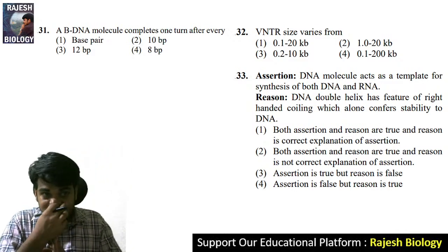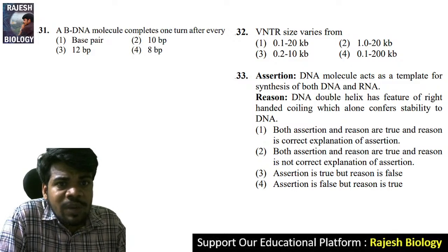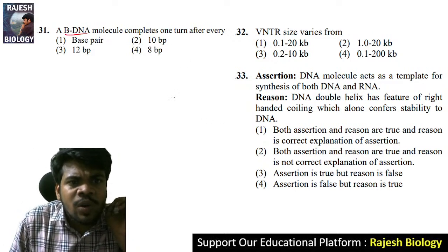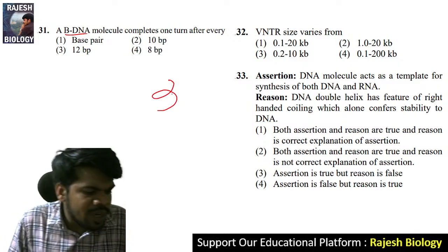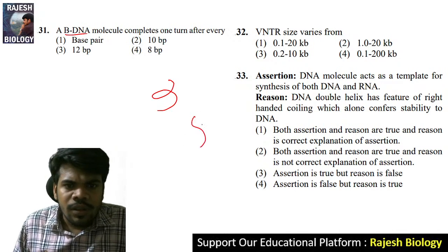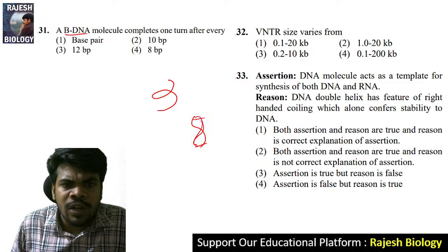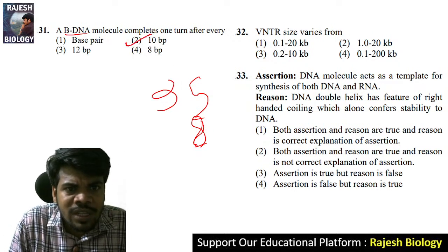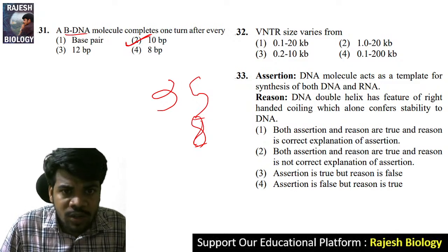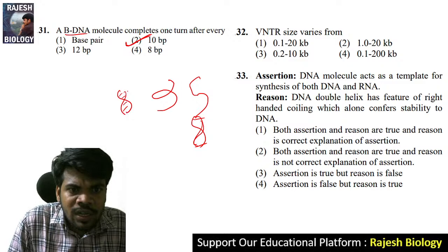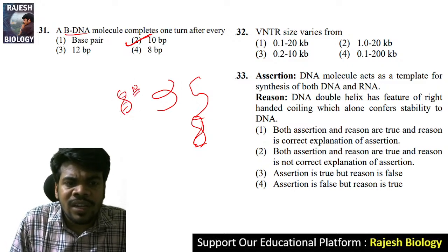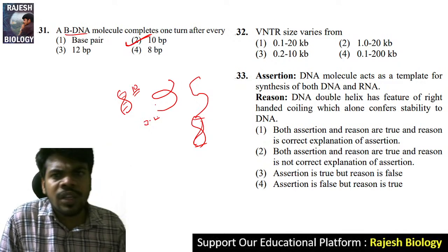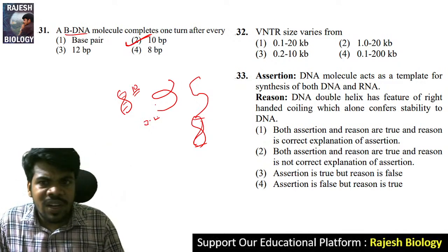Question 31: a B-DNA molecule completes one turn after every how many base pairs? It completes one turn after 10 base pairs. One pitch means one turn — for every pitch, 10 base pairs are there, spanning 34 angstroms or 3.4 nanometers. The right answer is 10.